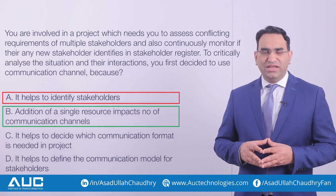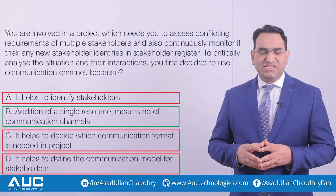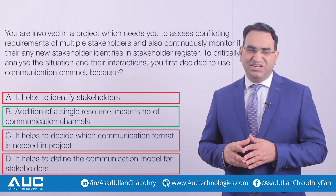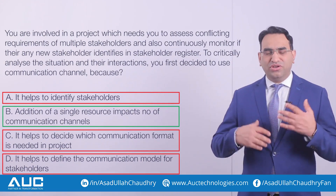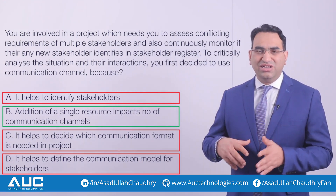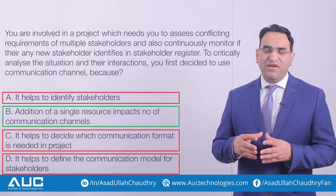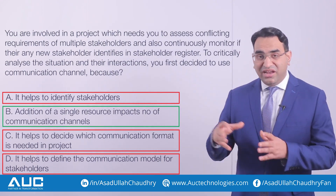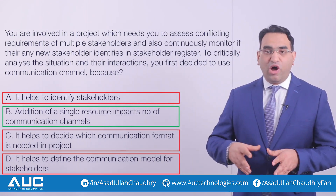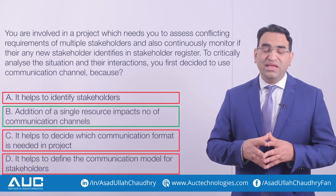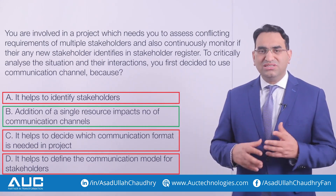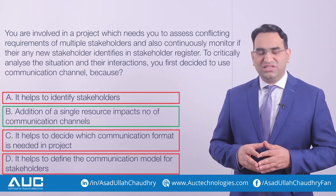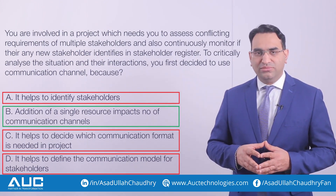Option C says communication channels help to decide which communication format is needed. When you talk about communication format, communication technology is the main area — it considers how many people are in a project, how early they need information, which type of environment you're working in, and how many regions you're operating in. This is part of communication technology, not communication channels, so Option C is wrong.